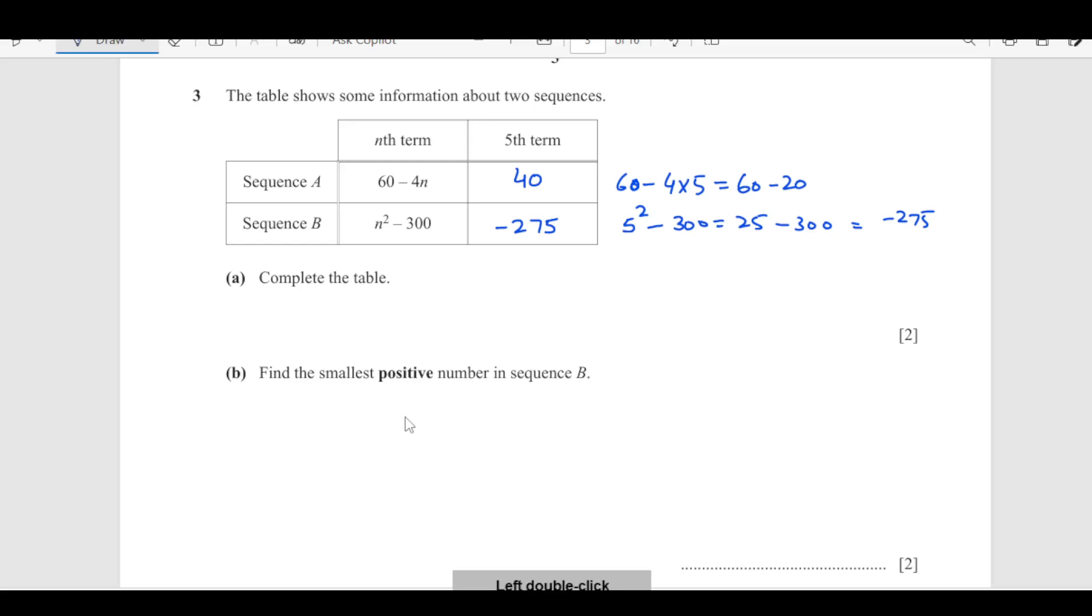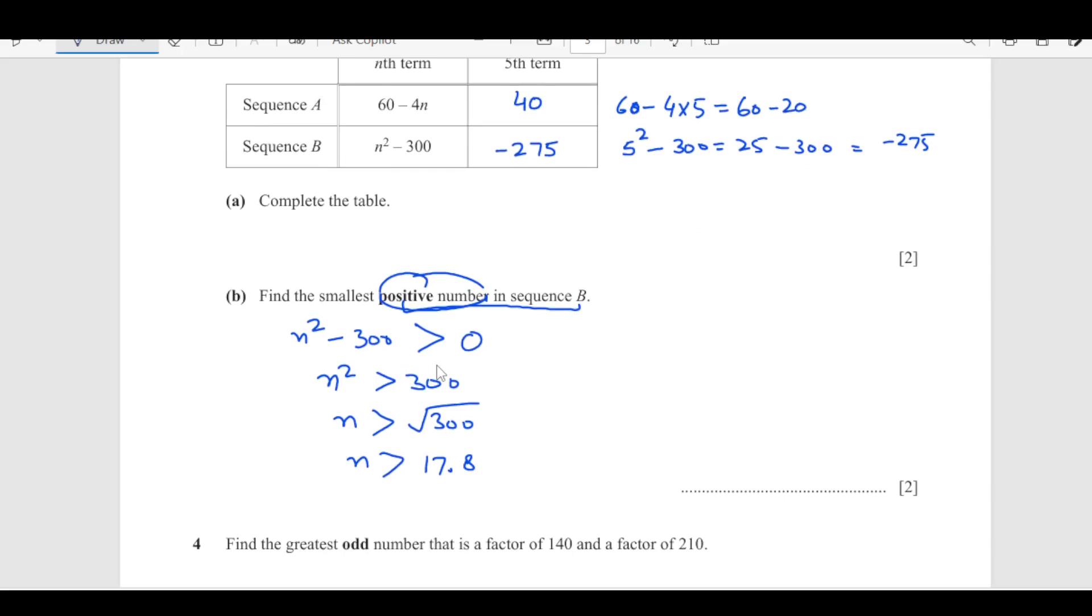Part B is find the smallest positive number in the sequence B. Now, nth term of sequence B is n squared minus 300, and it should be greater than 0 as we need a positive number. So, from here, n squared is going to be greater than 300 and n is greater than square root of 300. So, n is greater than 17.8. That means n should be equals to 18, right? So, that means 18th term is going to be positive. 18 squared minus 300. This is 324 minus 300 which is 24.